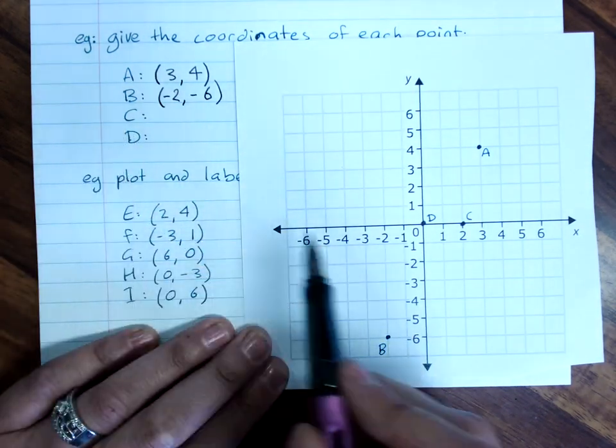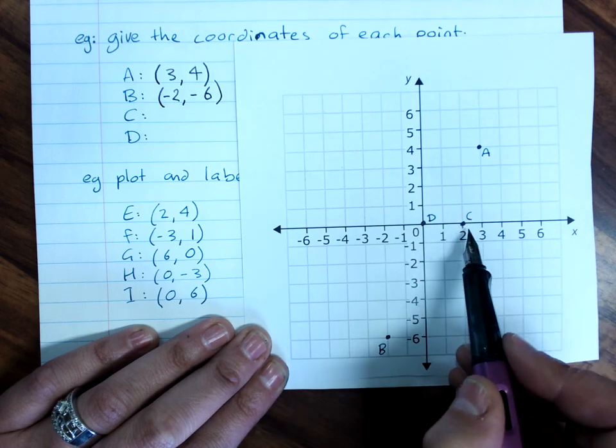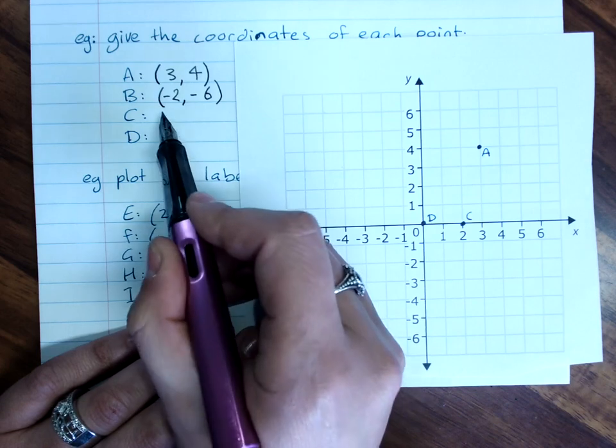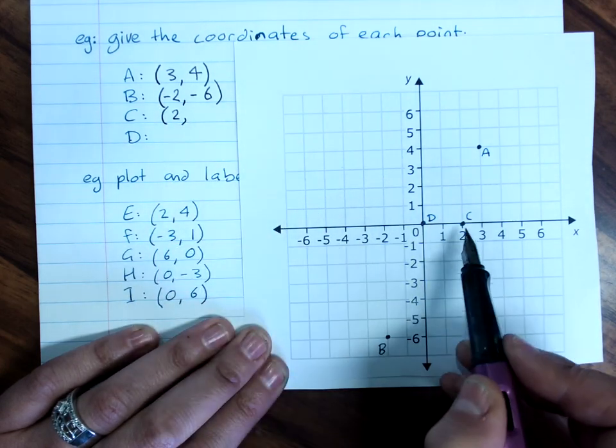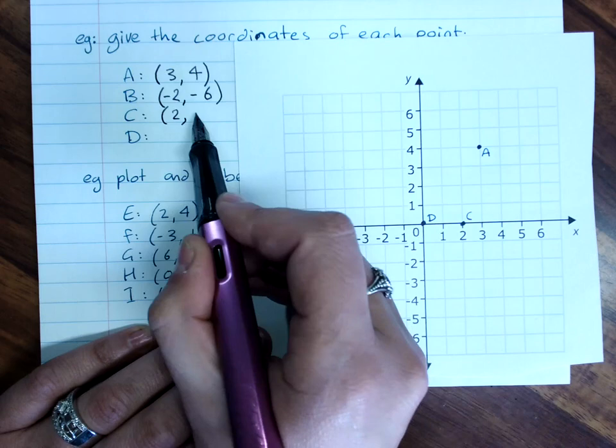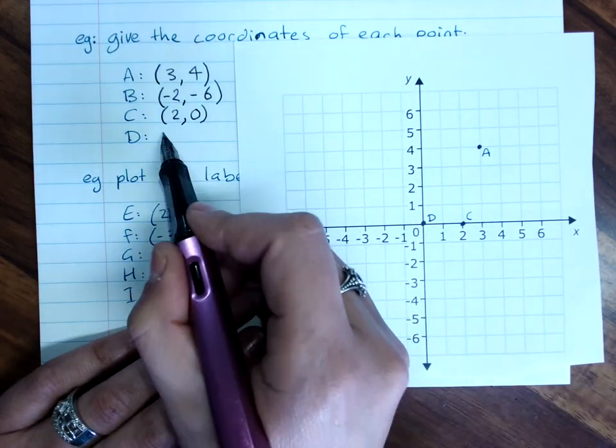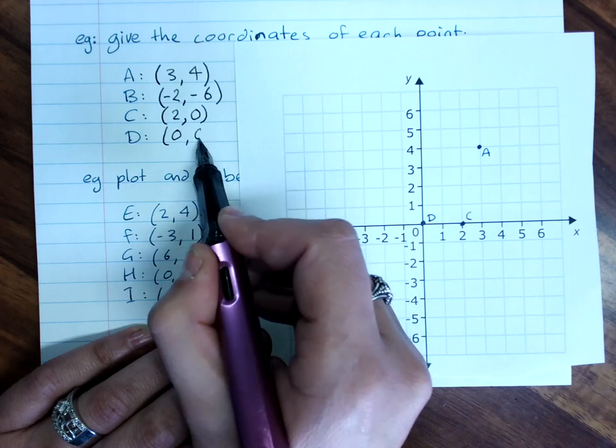Point C, well, it's already on the x-axis, so it's at two on the x-axis. And across to y, it's on zero. Point D is at the origin, zero, zero.